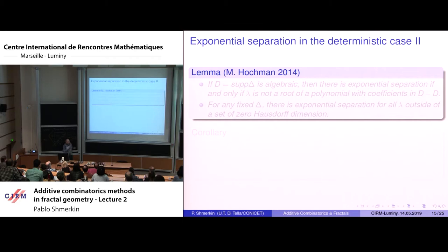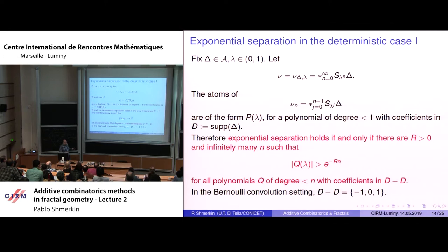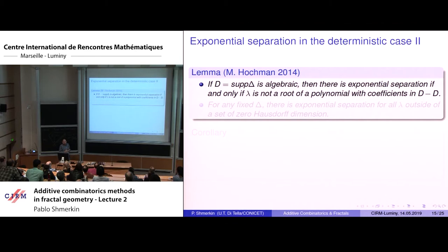Mike Hochman introduced exponential separation in this context and proved some properties. If the atoms of delta are all algebraic numbers, then exponential separation holds if and only if no non-zero polynomial in that class has lambda as a root. So if lambda is an algebraic number — for example rational — and is not a root of any {-1, 0, 1} polynomial, then exponential separation holds. For all rational numbers, the Frostman exponent of the Bernoulli convolution is one.